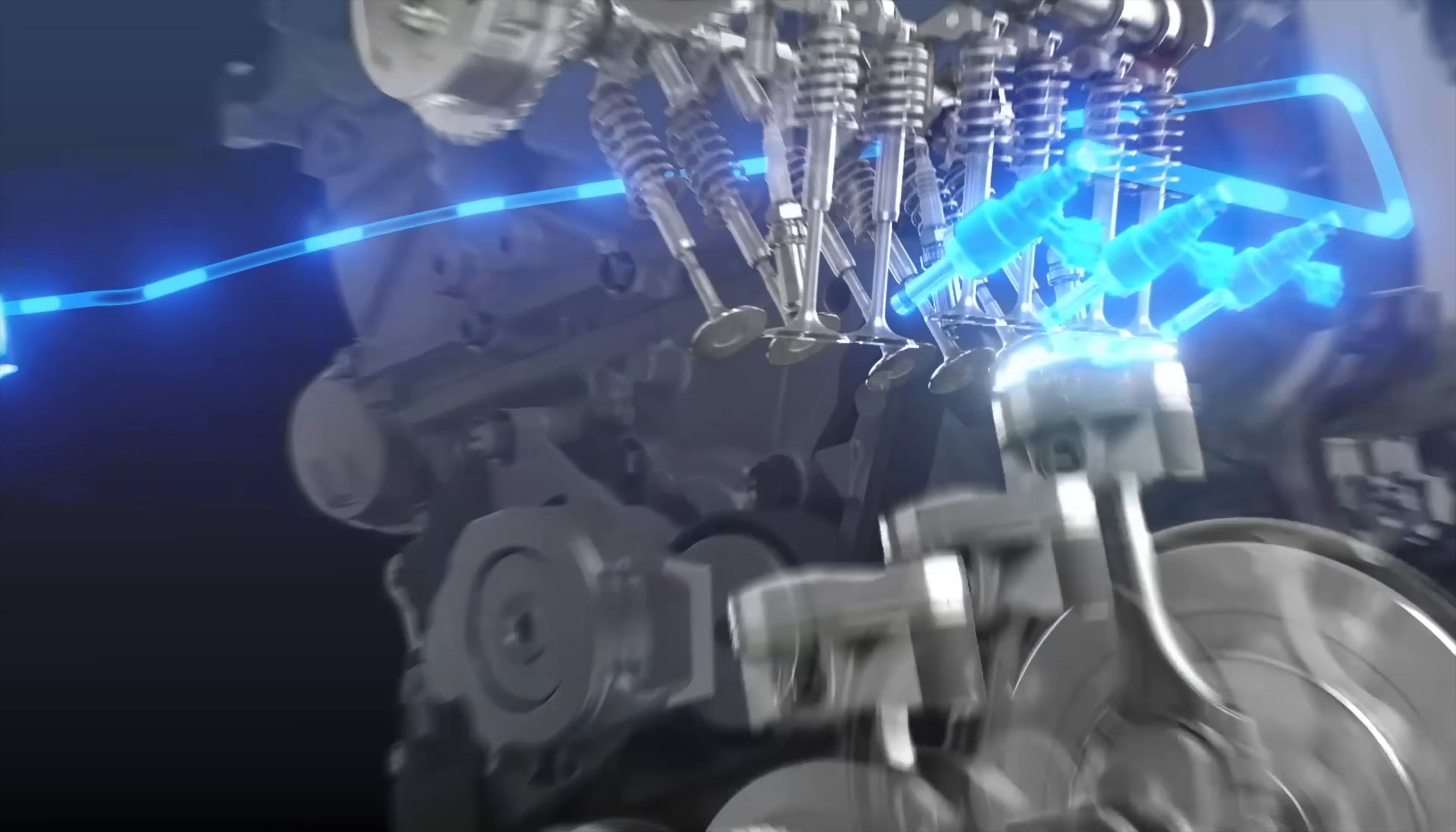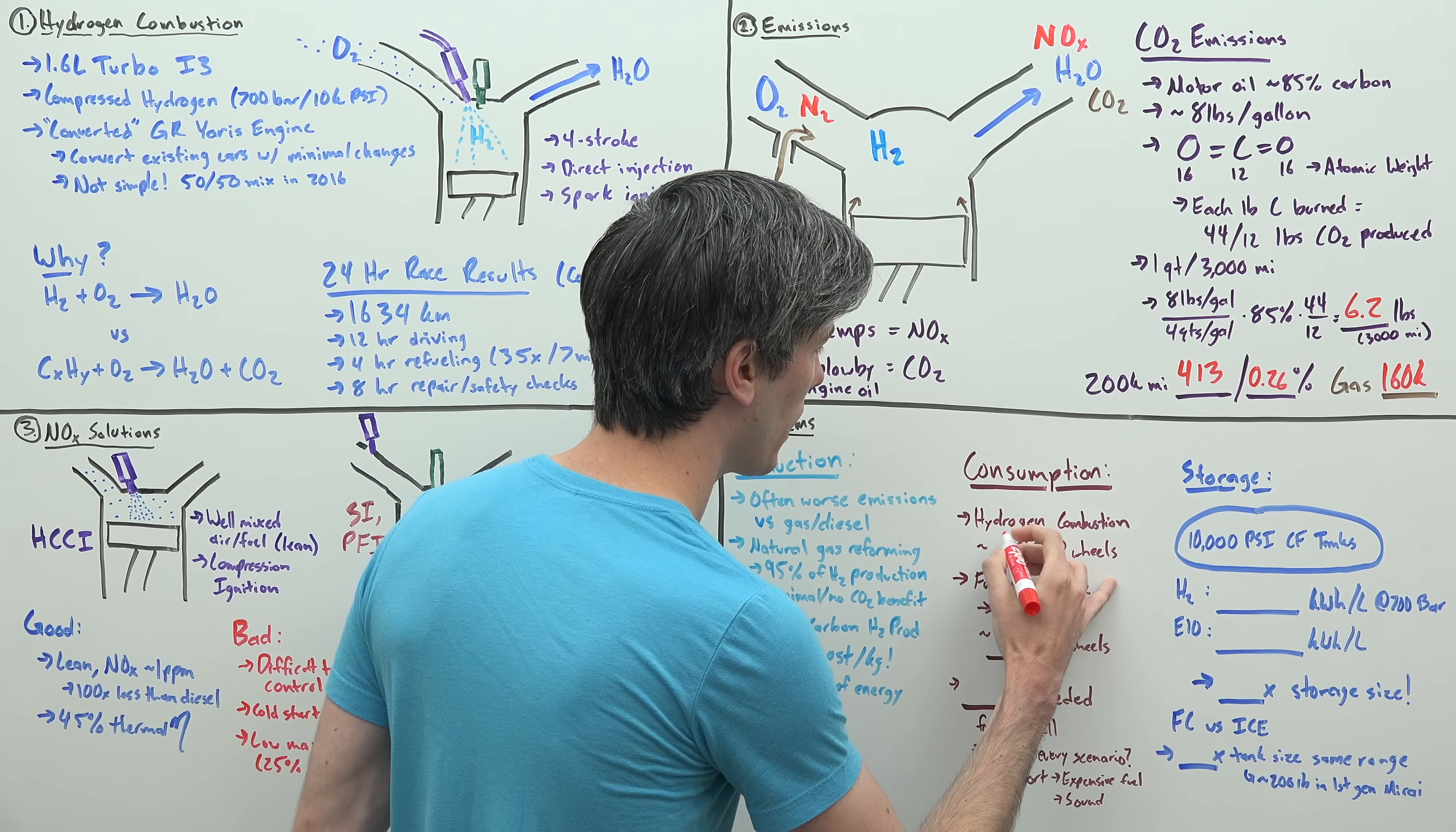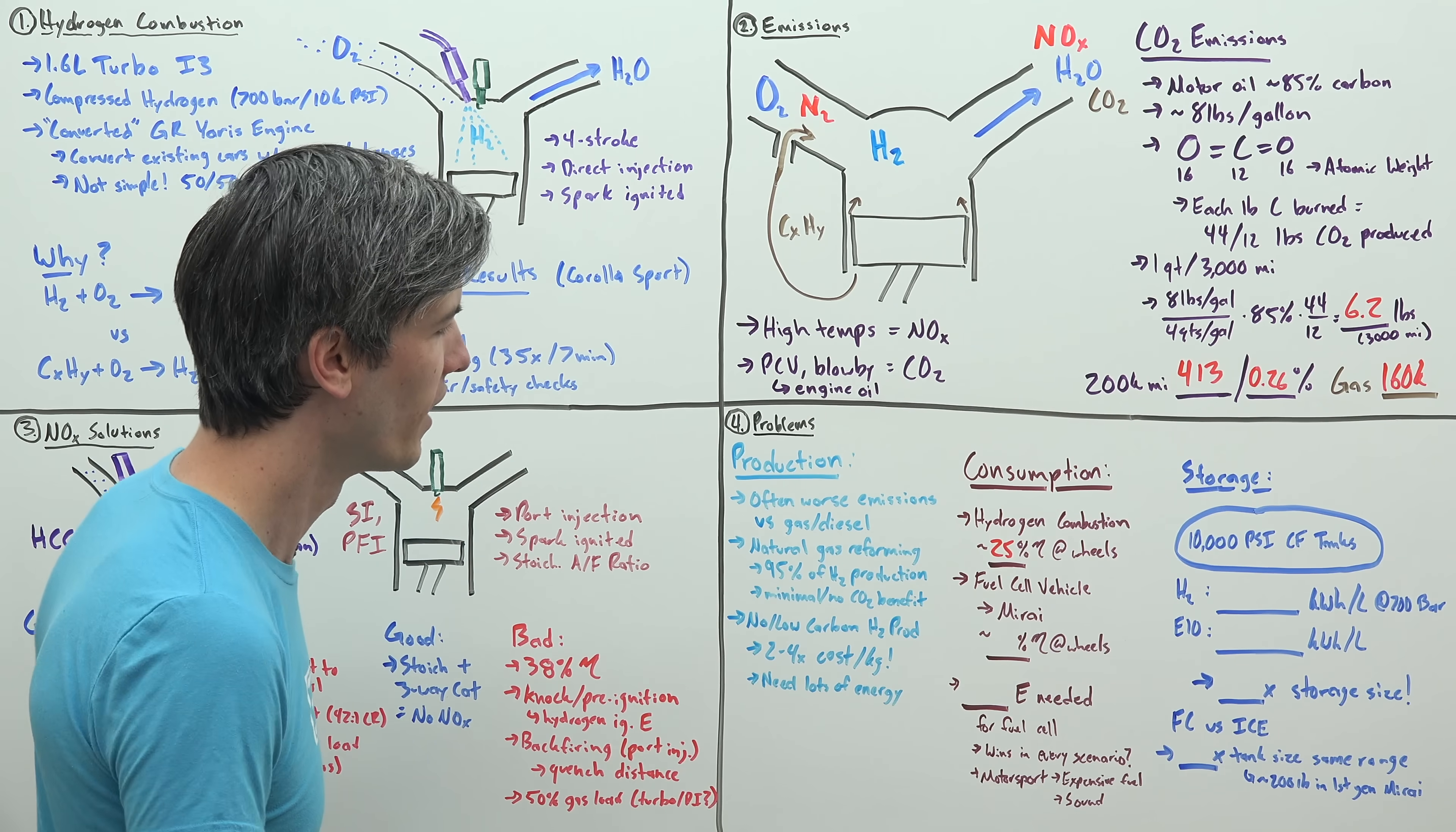Next we get to consumption, the efficiency of a hydrogen combustion engine. Once you get to the wheels, you start with that hydrogen in the tank. Once you get to the wheels, you might have something like a 25% efficiency. Is there perhaps a more efficient way to turn that hydrogen into useful work?